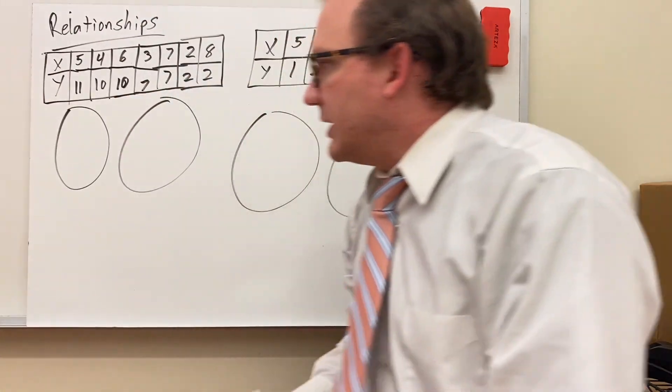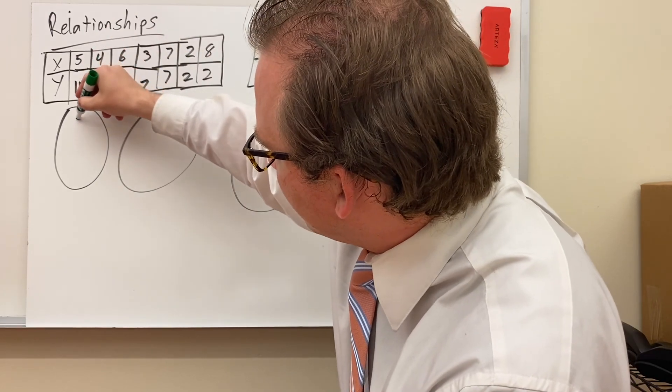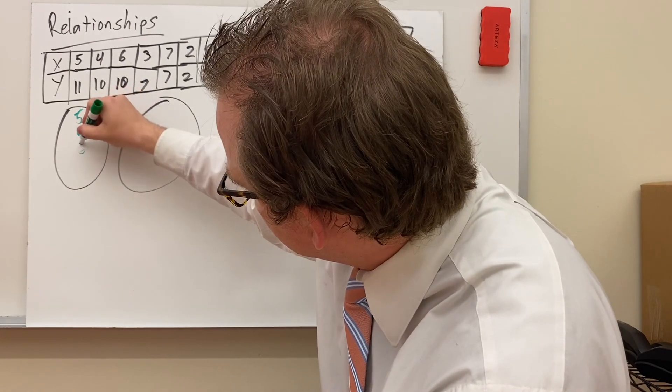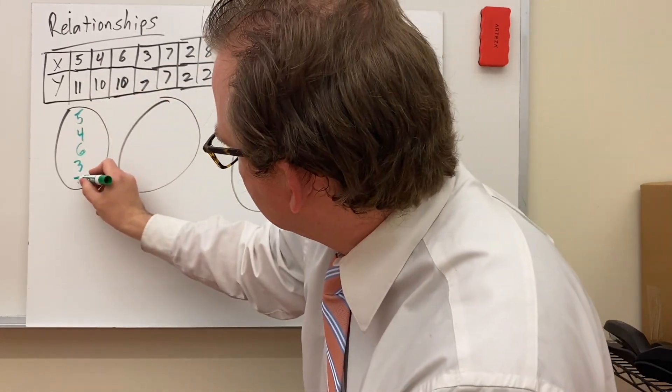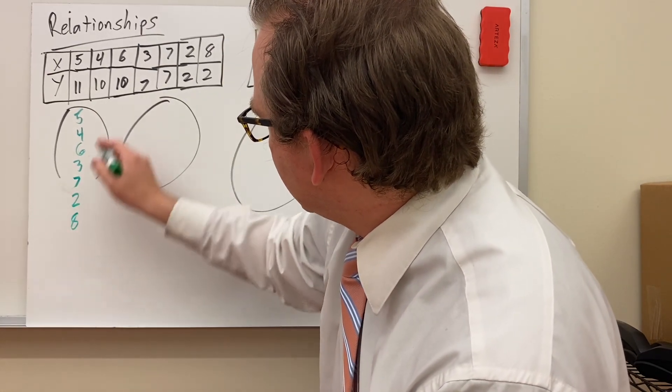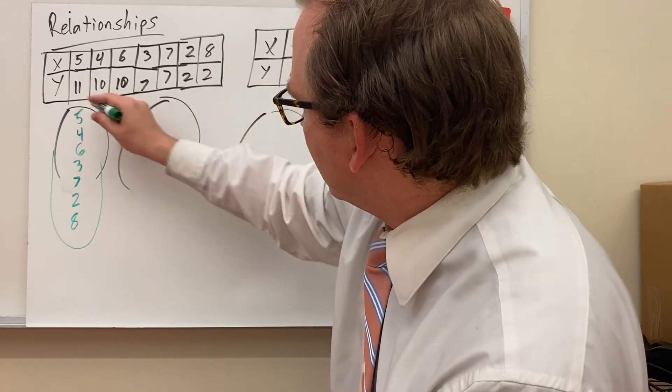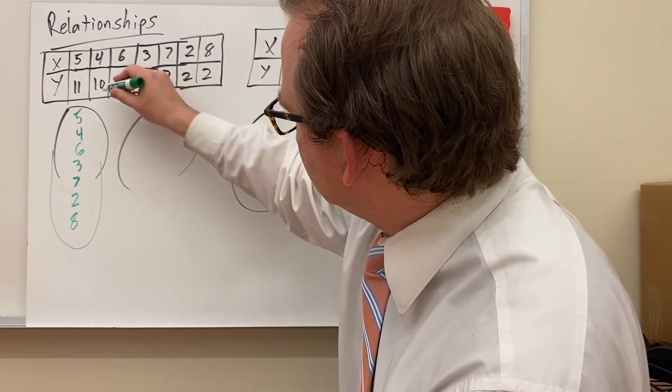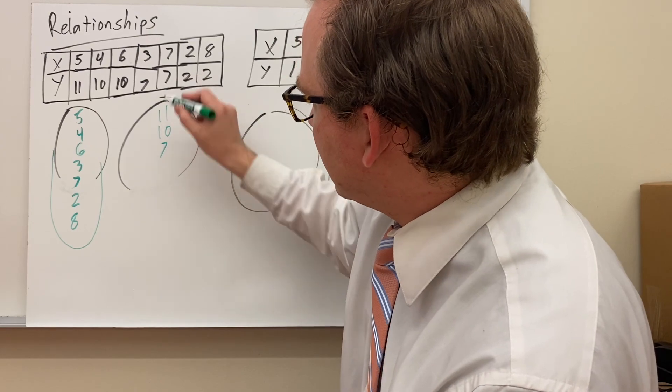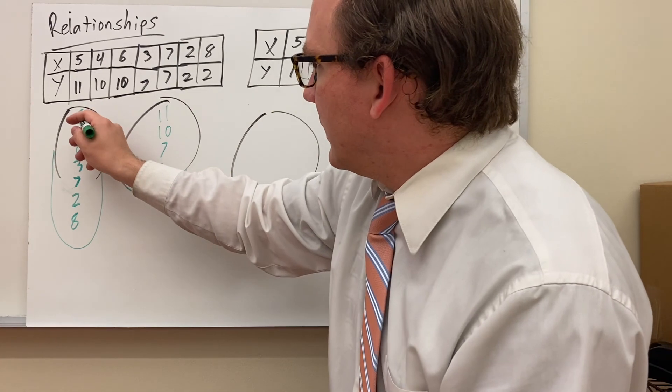Let's look at some relationships here. Make some arrow diagrams. And this one, we have our x-values. We have 5, 4, 6, 3, 7, 2, and 8. So I listed all my x-values here. My y-values are 11, 10, 10 again, 7, so I don't need to list 10 more than once, 7 again, and 2.